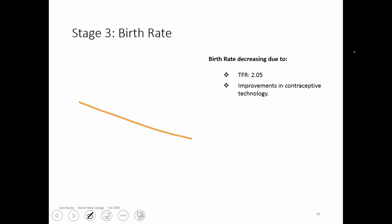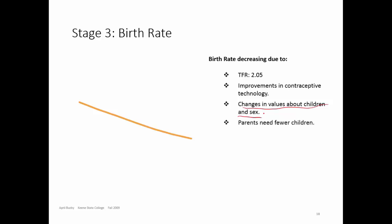Improvements in contraceptive technology — birth control condoms, birth control pills — are more widely spread. Changes in values about children and sex. Parents need fewer children. It's not an agriculture society anymore, so parents need fewer hands.